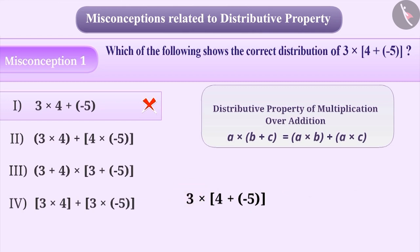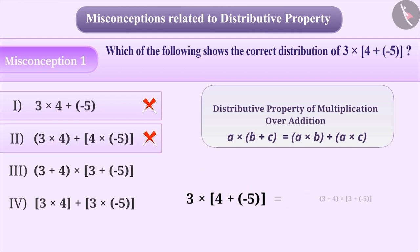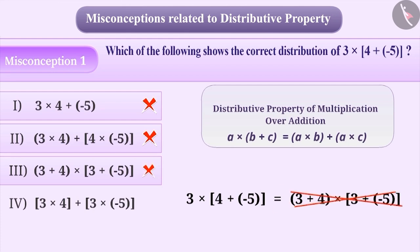Some kids, in a hurry, multiply the number outside the bracket with the first number inside the bracket, and then hastily multiply the first number in the bracket with the second number in the bracket. So, option 2 is also incorrect. Similarly, some kids instead of distributing multiplication over addition, distribute the addition over multiplication. This is also incorrect.